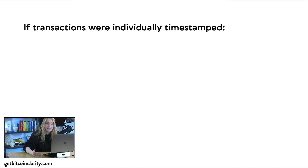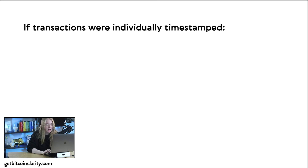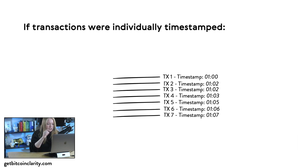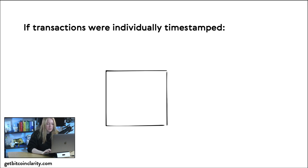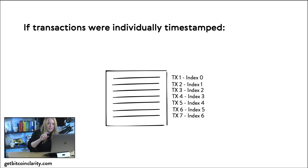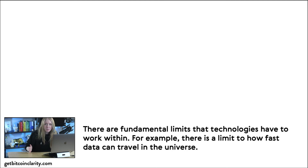Ledgers need to put transactions in some order. If I'm going to pay you and then you're going to pay someone else, we need to know when I don't have those funds and now that you do. So the most important thing is what order transactions are actually occurring in. But why aren't transactions just listed one after another with a timestamp? What's actually happening in the Bitcoin blockchain is that all transactions occurring in a block are said to have occurred at the same time. They have an index starting from zero, but no individual timestamp — only the block itself has a timestamp.